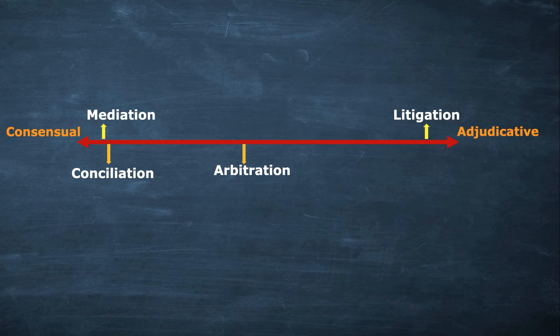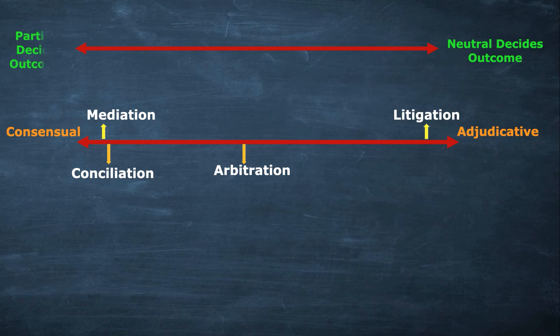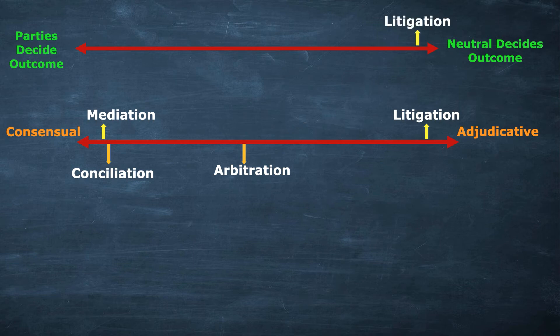Now let's look at another continuum: 'neutral decides outcome' on one side and 'parties decide outcome' on the other. Neutral here means the judge or an arbitrator. Starting with litigation — the court decides, so litigation is very close to the 'neutral decides outcome' side.